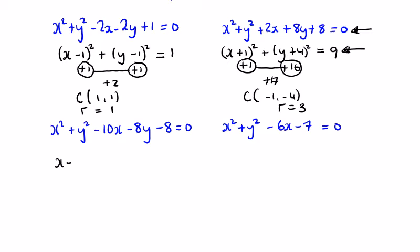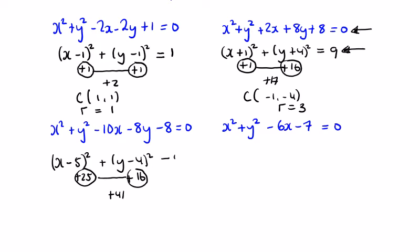For the third question: (x minus 5) squared gives x squared minus 10x plus 25 — that 25 is not wanted. (y minus 4) squared gives y squared minus 8y plus 16 — that 16 is also not wanted. So I've brought in 41 total. I need to take away 49 to get back to minus 8, so we write equals 49. The centre is (5, 4) after changing the signs, and the radius squared is 49, so the radius is 7.